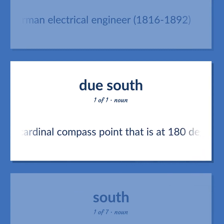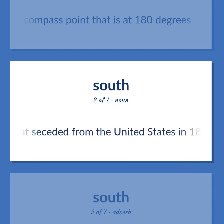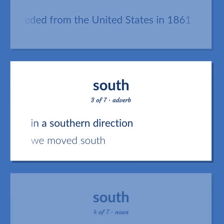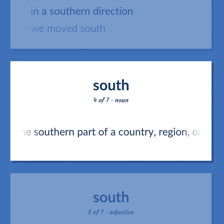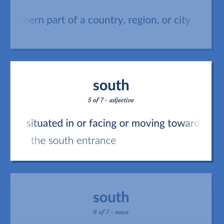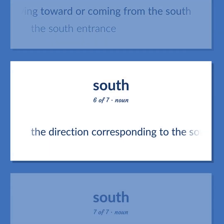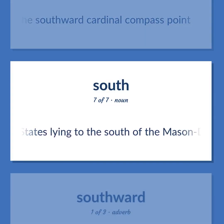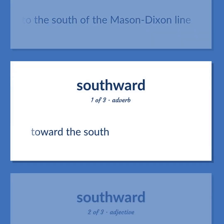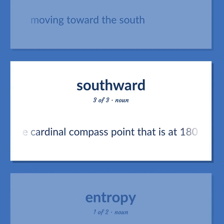The cardinal compass point that is at 180 degrees. The southern states that seceded from the United States in 1861. In a southern direction — "We moved south." A location in the southern part of a country, region, or city. Situated in, facing, moving toward, or coming from the south — "The south entrance." The direction corresponding to the southward cardinal compass point. The region of the United States lying to the south of the Mason–Dixon line. Toward the south; moving toward the south.